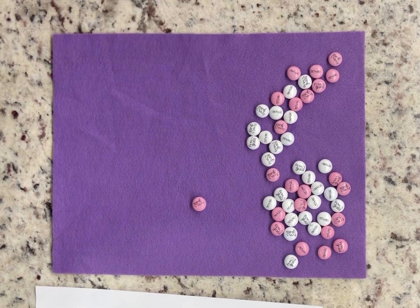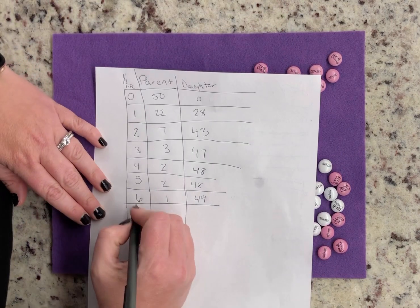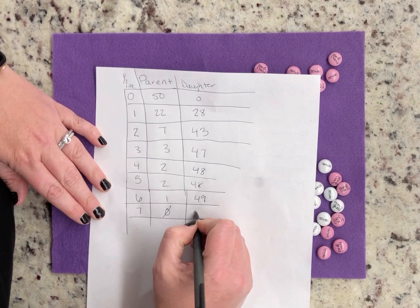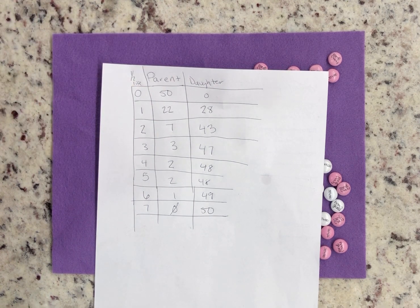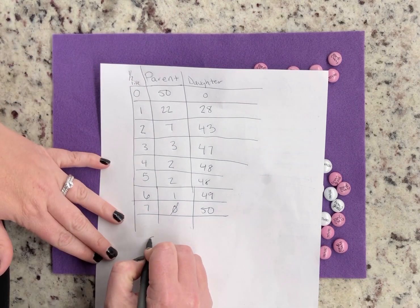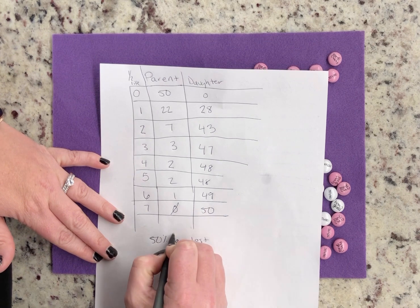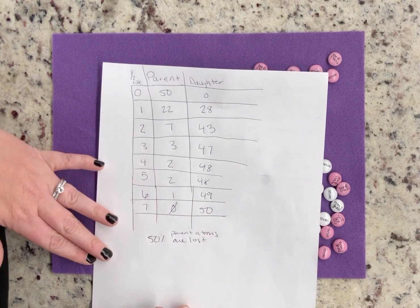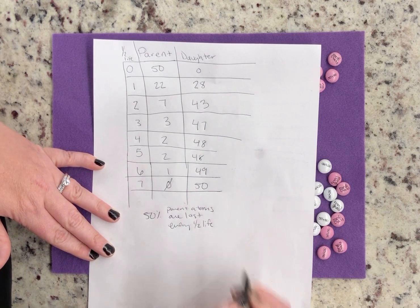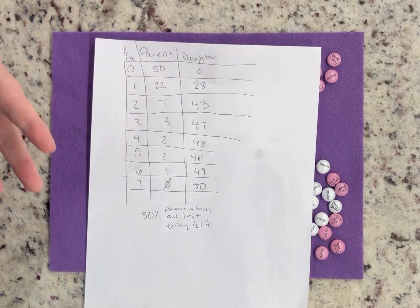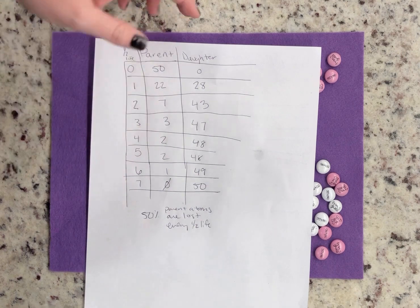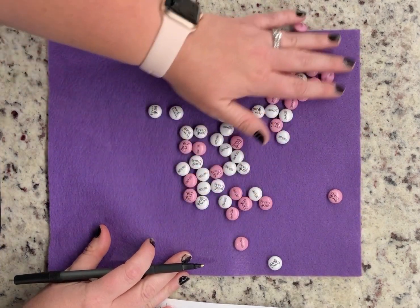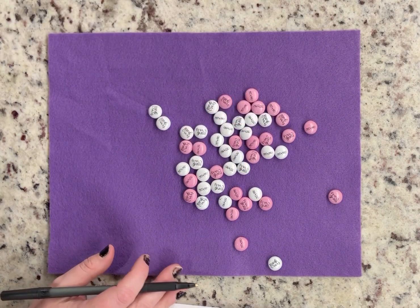Now we only have one left, so during half-life six we have one parent and forty-nine daughter atoms. After seven half-lives, all of our parent atoms have decayed. In a real scenario, the parent atoms will never actually reach zero because you're always dividing by two — fifty percent of the parent atoms are lost every half-life, so that number will never actually hit zero. But in this flip-over scenario, eventually the last one will flip over.